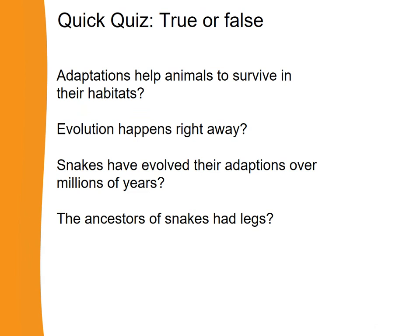That is the end of today's lesson, so let's finish with a quick quiz. Question one: adaptations help animals to survive in their habitats — true or false? That one is true. Question two: evolution happens right away — true or false? That one is false. Evolution happens over millions of years. Question three: snakes have evolved their adaptations over millions of years — true or false? That one is of course true. Snakes evolved to lose their limbs over millions of years, and have also evolved scales, cold-bloodedness, and adaptations that make them good predators.